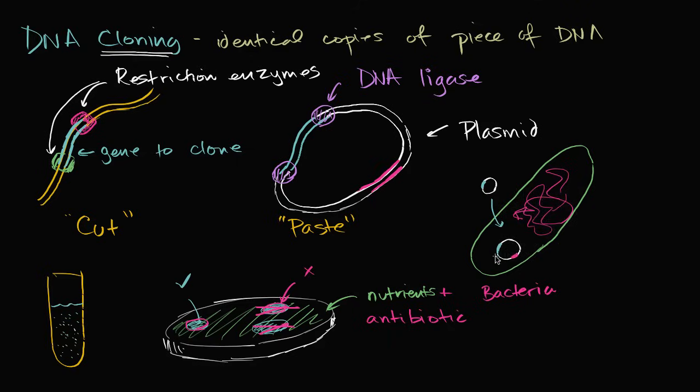And then the bacteria starts reproducing. And as it reproduces, it also is reproducing the plasmids. And because it has this antibiotic resistance, it is going to grow on this nutrient antibiotic mixture. And the other bacteria that did not take up the plasmids are not going to grow. And so just like that, you can take this colony right over here and put it into another solution or continue to grow it, and you will have multiple copies of that gene that are inside of that bacteria.